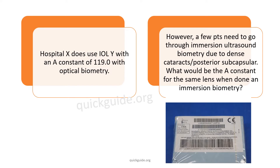Even when you have an optical biometry machine, you may often have to fall back upon immersion biometry because of dense cataracts, posterior subcapsular cataracts, or even corneal scars. So in this case, what would be the immersion biometry A constant for a given lens whose optical biometry A constant has been announced by the manufacturer — say 119.0 or 119.2? This is a dilemma you will often find with new-age IOLs.